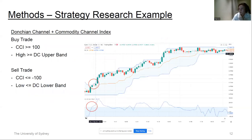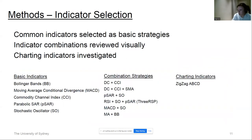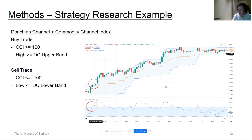Here's an example combining the Donchian channel and commodity channel index. Standard signals for the CCI are whether it is above or below 100 or negative 100, and if the high price is above or below the respective Donchian channel bands. In this example, the CCI breaches the 100 bullish signal while the high price breaches the Donchian channel, and we can see this led to quite an appreciation in price — a good example of a combination strategy developed through visual observation.